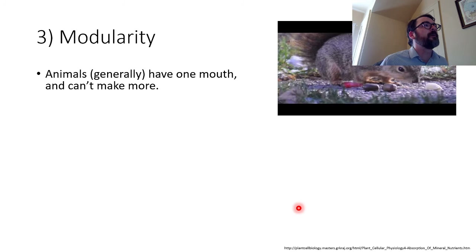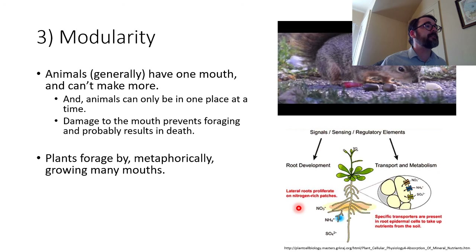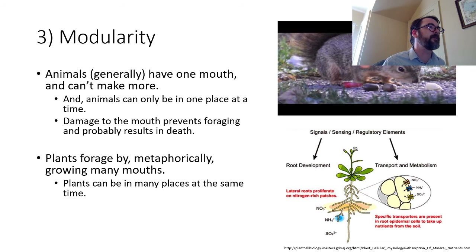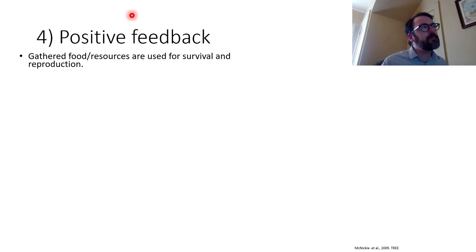Animals generally only have one mouth — you were born with the heart and lungs and kidneys you have now, but a plant remakes its entire vascular system every year. Animals can only be in one place at a time, but plants can make many mouths and put them all over the place. If a plant loses a leaf it can make a new one. A squirrel in a bowl full of peanuts can't grow extra mouths to eat faster — it just doesn't work that way. Plants can be in many places at once, and damage to one part isn't as big a deal as it is for an animal.